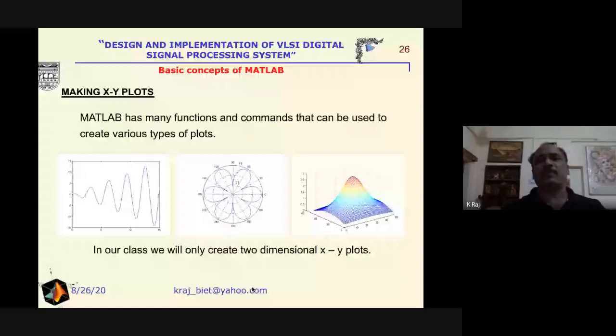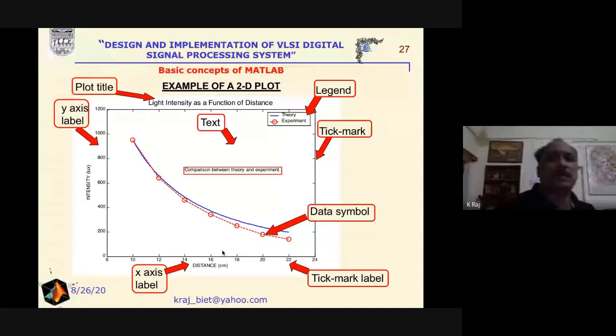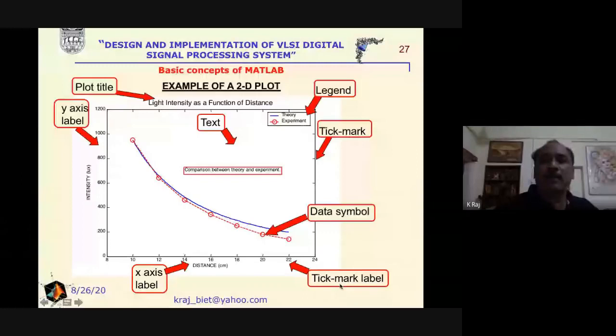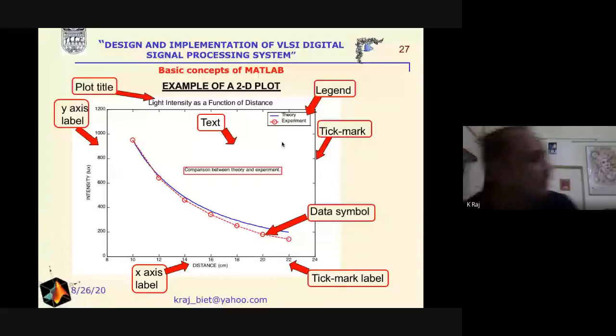After drawing the graph, some formatting is required: the plot title, what to write on the y-axis, what to write on the x-axis, tick marks on x and y axes, data symbols representing each data point, and text annotations — for example, a comparison between theory and experiment. A legend is also needed to describe which graph shows theory and which shows experiment.